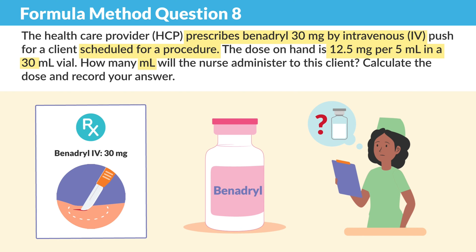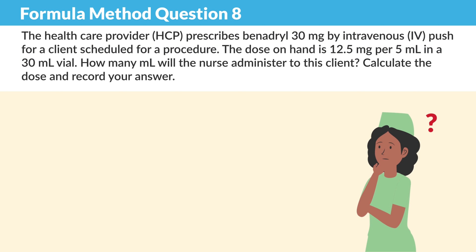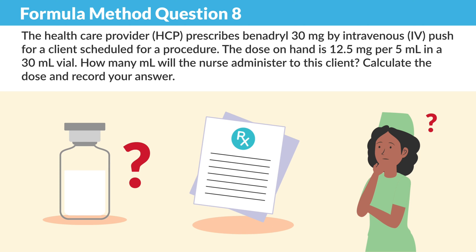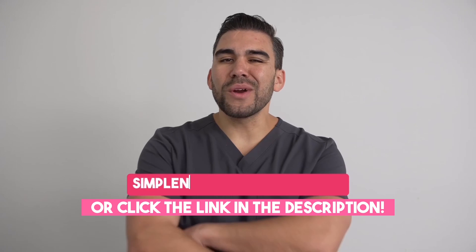You can see it's getting a little bit more difficult. So let's break this down one by one. First, we're identifying what we are solving for — we're solving for ml's per dose. Next, set up the equation using the desired over have formula method: D over H times the quantity.